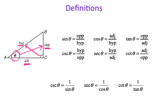Sine is opposite over hypotenuse, cosine is adjacent over hypotenuse, and tangent is opposite over adjacent. Cosecant, secant, and cotangent are just reciprocals of sine, cosine, and tangent. So cosecant would be hypotenuse over opposite, secant would be hypotenuse over adjacent, and cotangent would be adjacent over opposite.